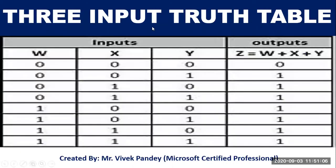This is the example of a three-input truth table. In a three-input truth table, eight different input combinations are possible, because the formula is two to the power n, and two to the power three equals eight. So eight different combinations are formed in a three-input truth table.